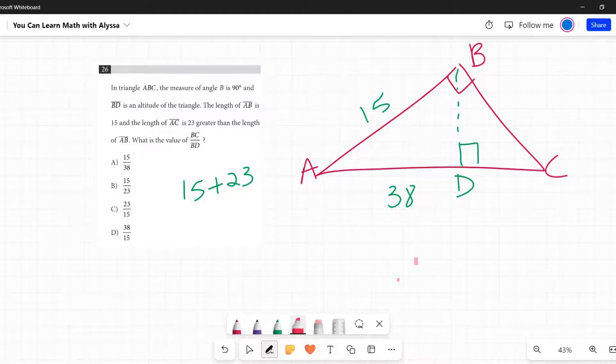But what do they want? They want BC to BD. BC and BD are part of this little triangle right here. So I'm going to forget about the bad triangle and going to look at BDC and how it relates to ABC.